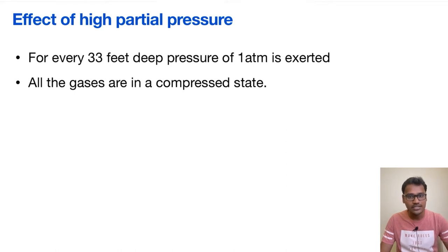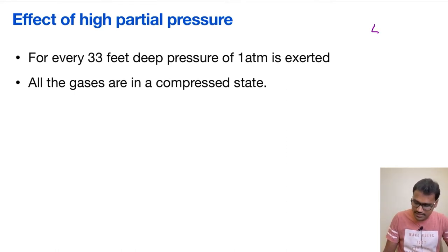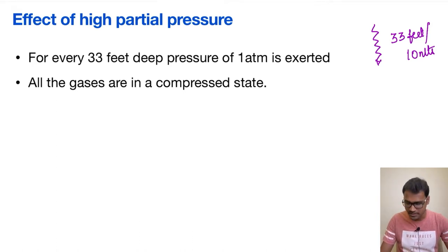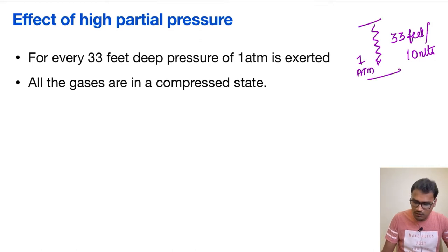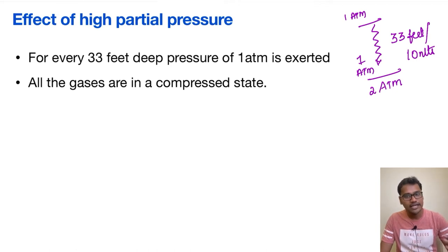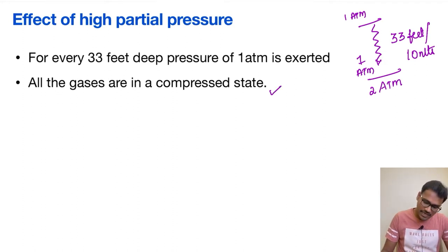Whenever a person is descending underwater, the barometric pressure starts to increase. When the person goes 33 feet or around 10 meters, one atmospheric pressure is added. Above sea level there is already one atmospheric pressure, so at 10 meters the person is exposed to two atmospheres. For every additional 33 feet of descent, one more atmosphere of pressure is added.